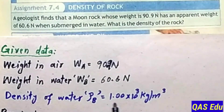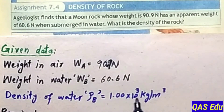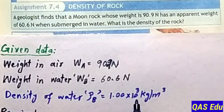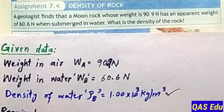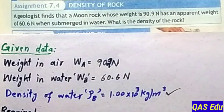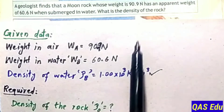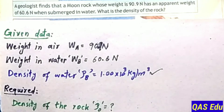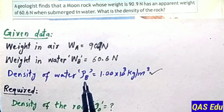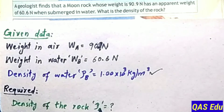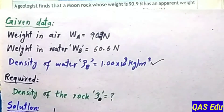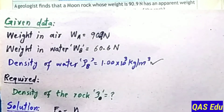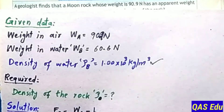Given data: weight in air is 90.9 Newton, weight in water is 60.6 Newton. Water density is 1.00 × 10³, that is 1,000 kg/m³. The required quantity is the density of the rock — that is the density of the object.